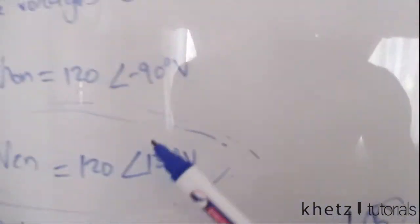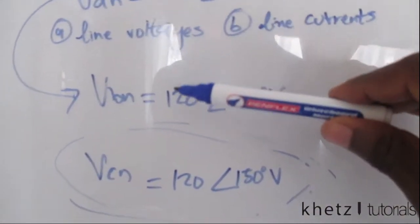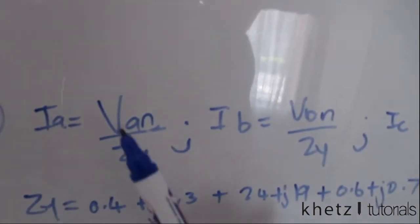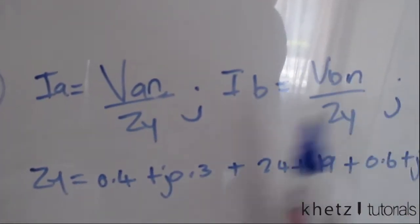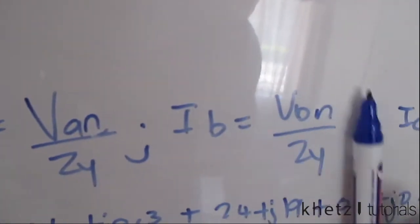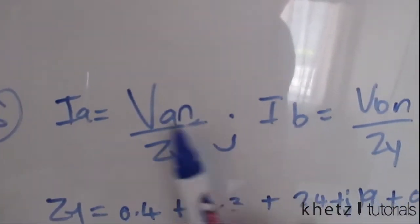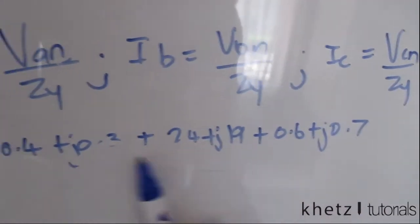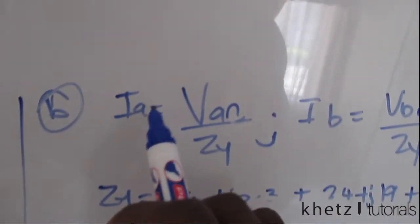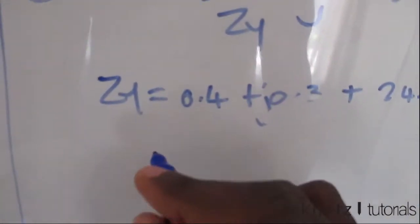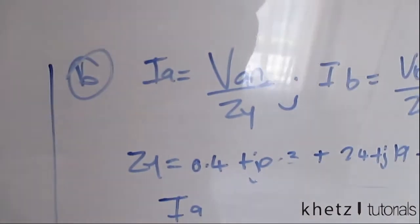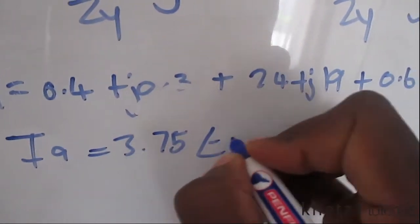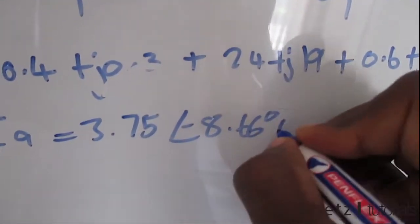I first found V_AN, V_BN, and V_CN — the question wasn't asking for them directly, but I knew they would help in this next part. Now that you have all those values, substitute them into the formulas with the total impedance per phase. For I_A you should get 3.75 amperes at an angle of negative 8.66 degrees.